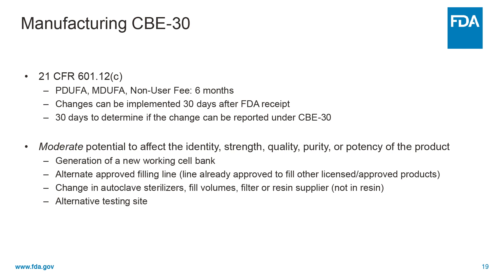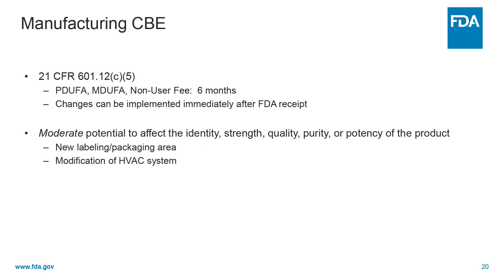A CBE also contains proposed changes with moderate potential to impact product safety, but less so. The applicant may implement the proposed changes immediately after submission to the FDA. Changes with a moderate potential to affect product safety include a new area for labeling or packaging, or a minor modification to a building's HVAC system. Full review of a CBE is completed in six months.